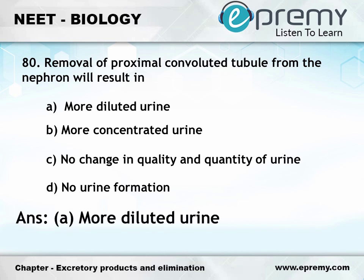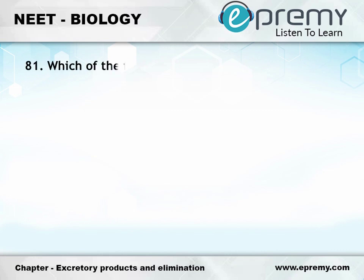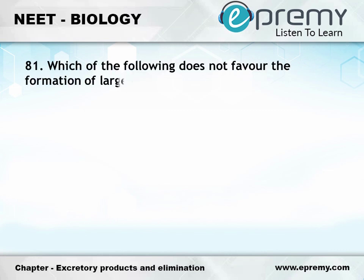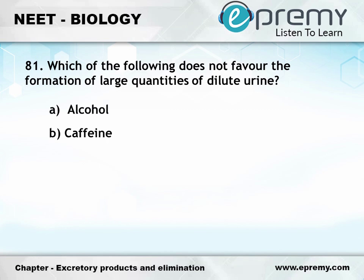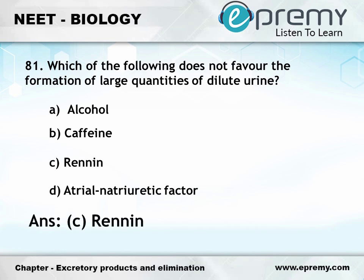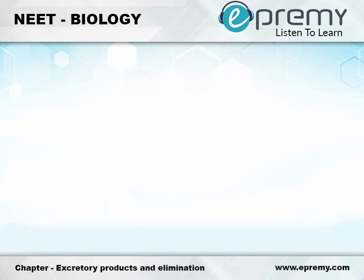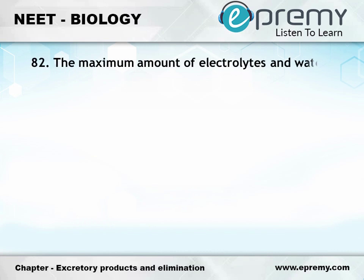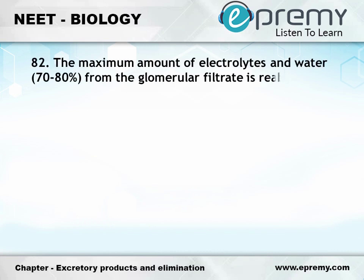Question number 81: Which of the following does NOT favour the formation of large quantities of dilute urine? Option A: (not stated), Option B: Caffeine, Option C: Renin, Option D: Atrial natriuretic factor. The answer is Option C: Renin.